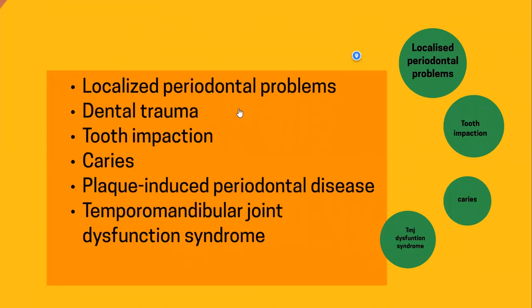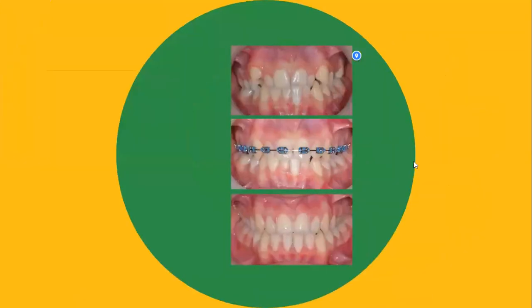Along with aesthetics, which is mainly the chief concern of the patient, we as professionals should look after ideal functionality and ideal stable position — nobody wants a treatment where all the features of the malocclusion come back. So we'll be talking about the benefit of orthodontic treatment along with its typical features. Along with aesthetics, there are certain other indications which necessitate orthodontic treatment. For example, localized periodontal problems.